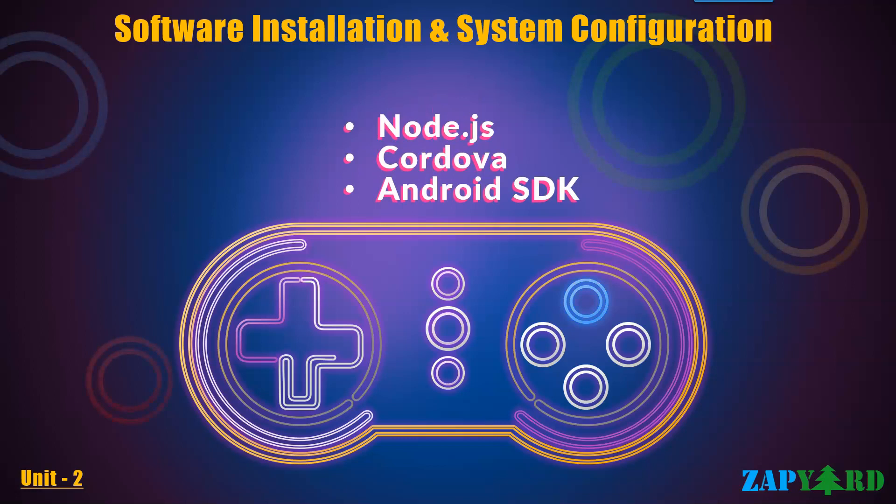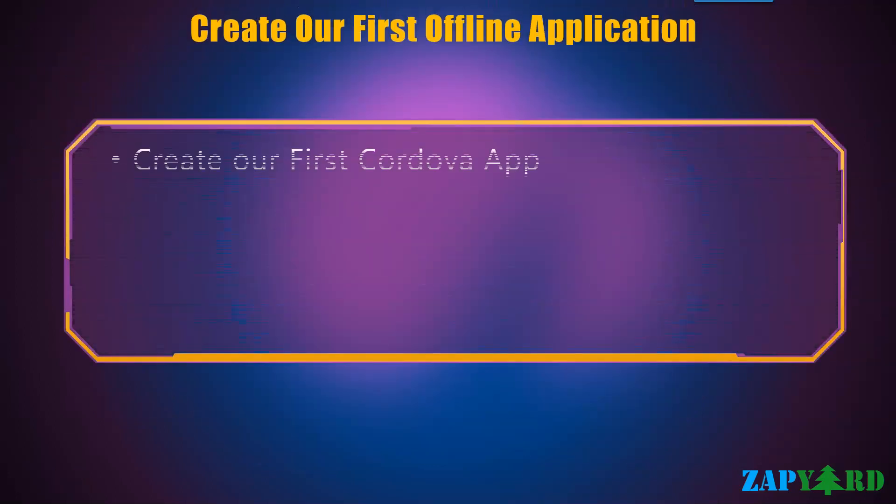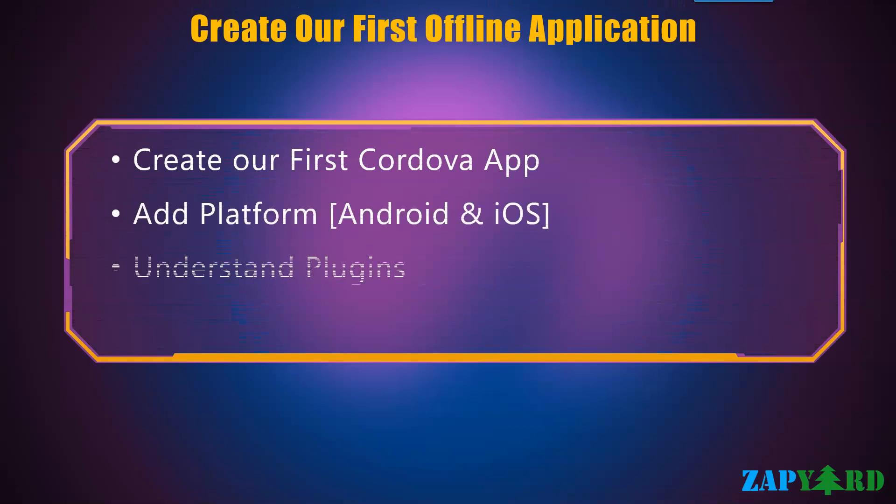We will cover in detail the steps to install Node.js, Cordova and Android SDK. Almost all ABAP developers and SAPUI5 developers will not be aware of these tools. Do not worry — our trainer will explain the importance and usage of these softwares in great detail. Once we have the softwares in place, we will create our first Cordova app.